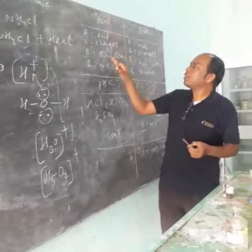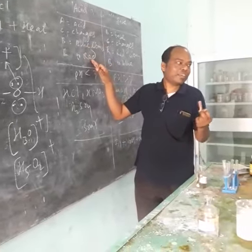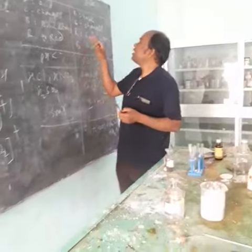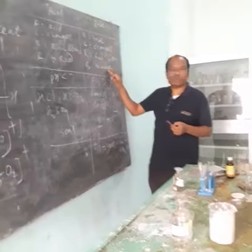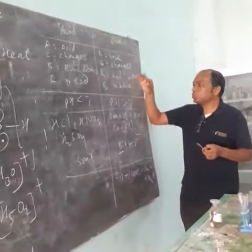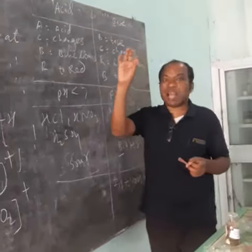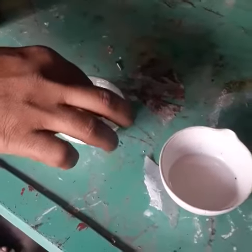It converts red litmus to blue. So I have red litmus paper and I am going to dip this in NaOH solution. So it will convert red litmus paper to blue color.